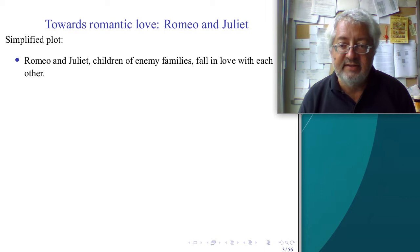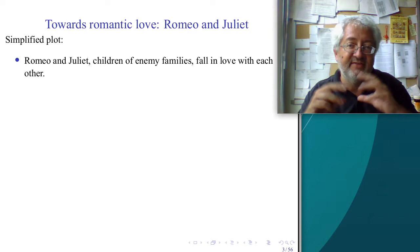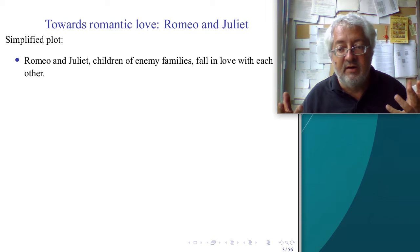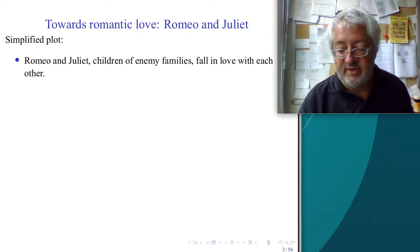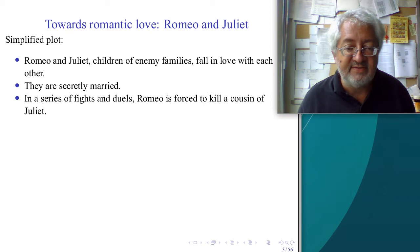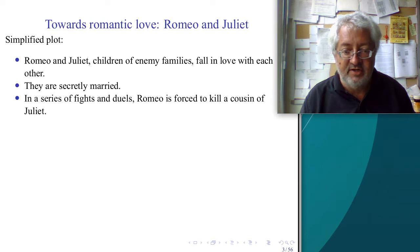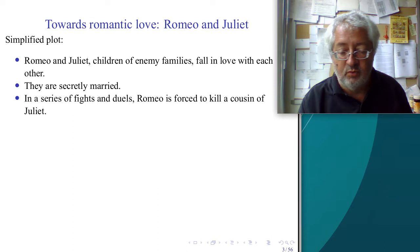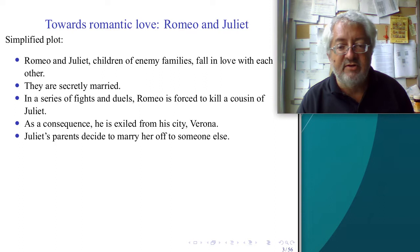We look at Romeo and Juliet in this case. Shakespeare's play: Romeo and Juliet are two children of enemy families — two powerful families at war with each other. The children fall in love when they meet, creating a problem because their families are enemies and they are not supposed to be together. They are secretly married by a friendly priest, but in a series of fights and duels, Romeo is forced to kill a cousin of Juliet.